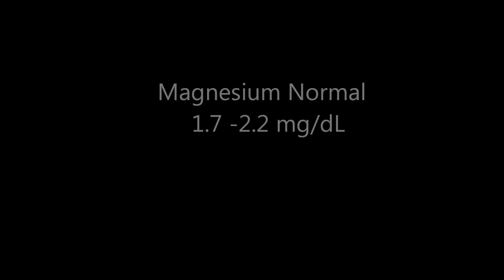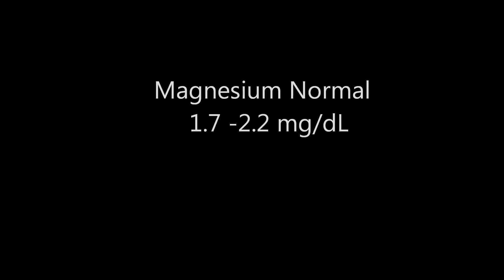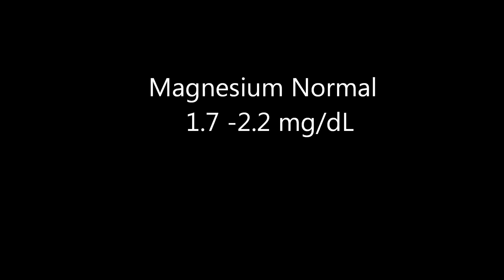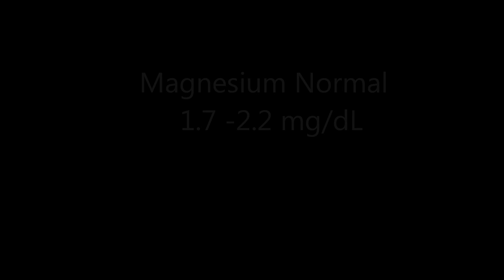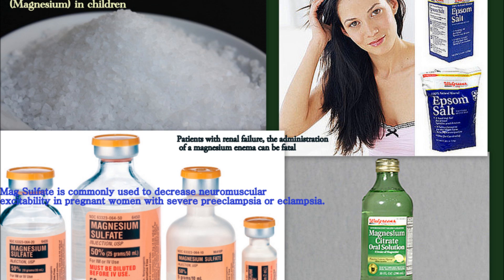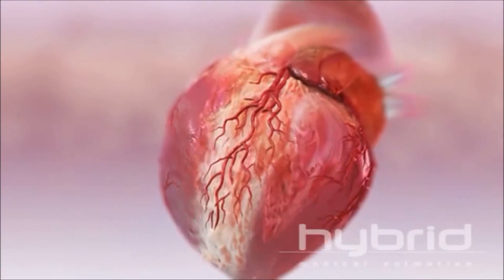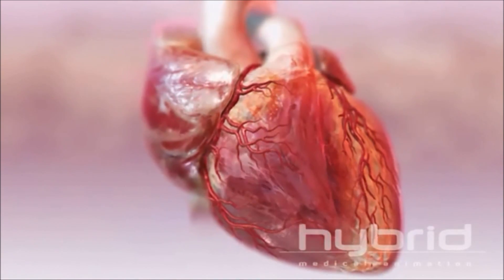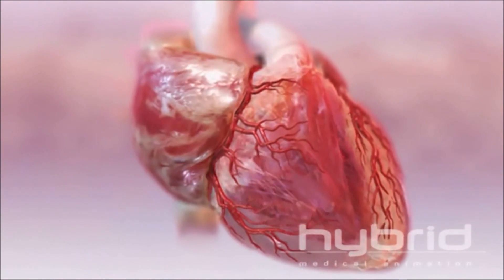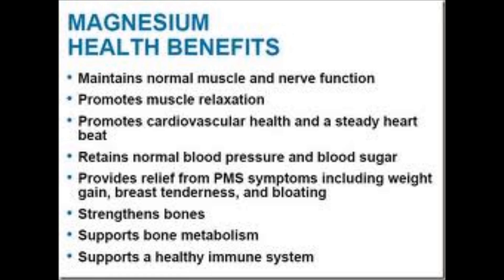Magnesium — what is the normal range for magnesium? It is 1.7 to 2.2 milligrams per dL. Magnesium is the second most abundant intracellular cation. It contracts the myocardium, influences transport of sodium and potassium across cells, and has a very important role in the metabolism of carbohydrates and proteins.